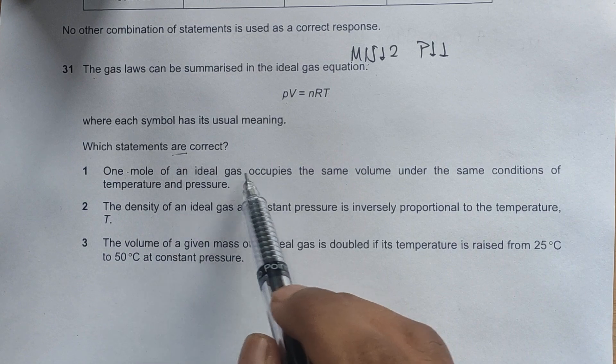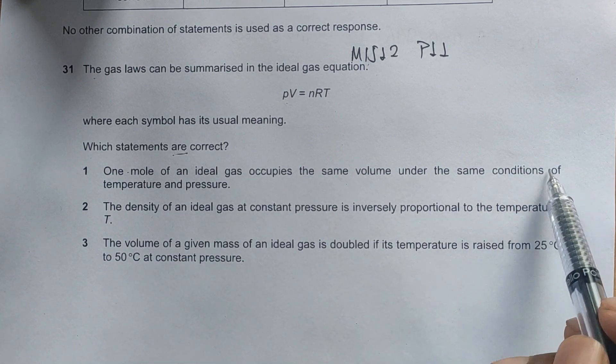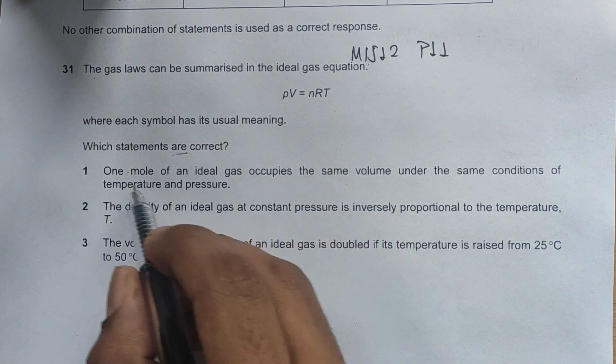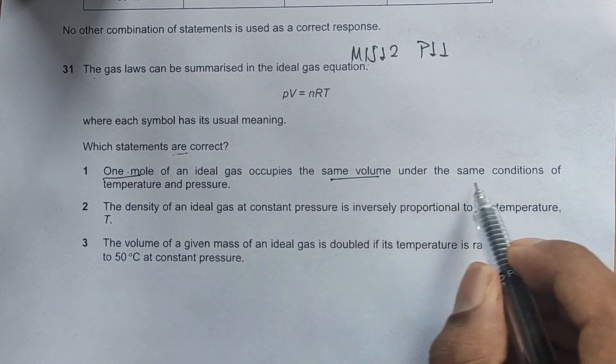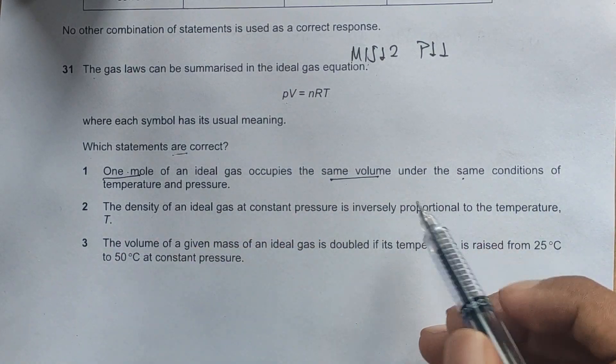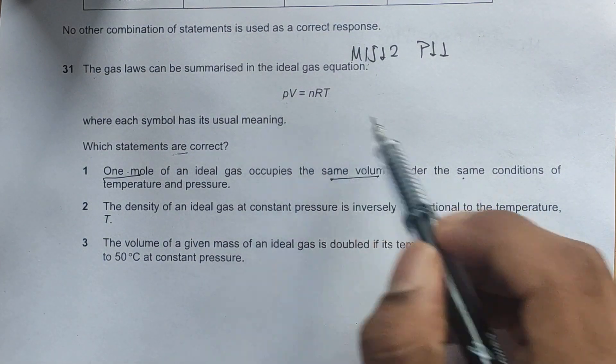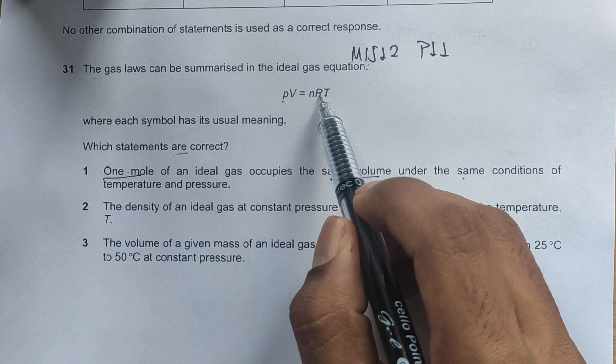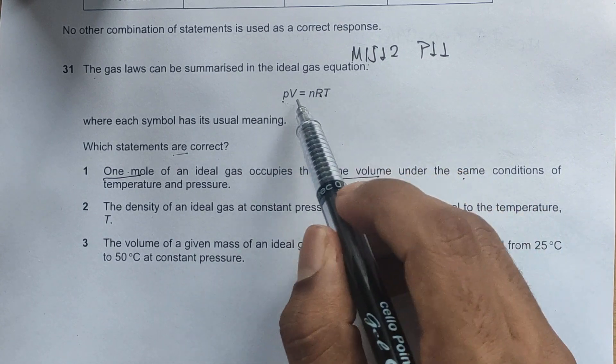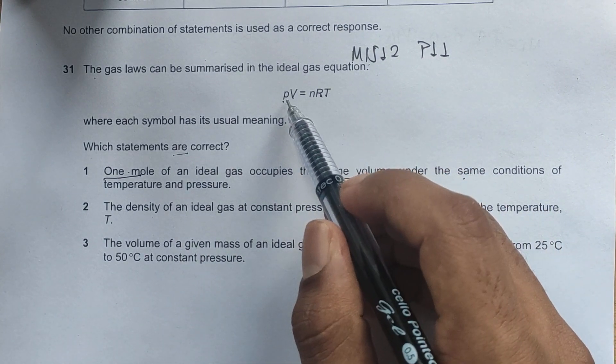Statement one: One mole of an ideal gas occupies the same volume under the same conditions of temperature and pressure. Looking at this equation, if we have same conditions of temperature and pressure, R is a gas constant, so it's constant. The remaining is V equals n, so this satisfies the first option.